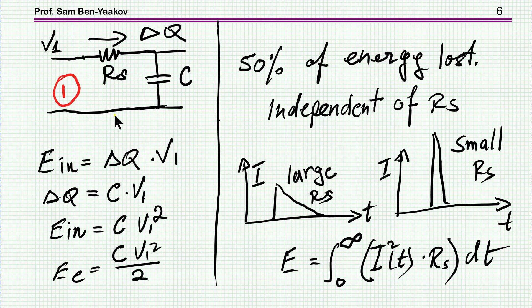Let's start with a simple case of a resistor charging a capacitor. Now we know there is a loss of energy. If we have an amount of delta Q coming out of the source, then the energy coming out is delta Q times the voltage. Delta Q is the charge stored in the capacitor, C times V1.